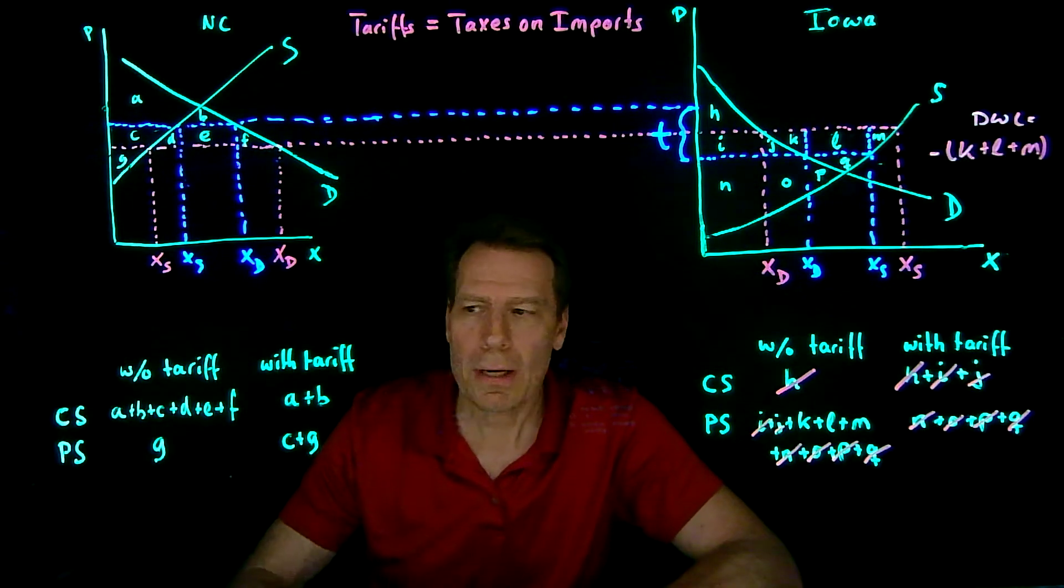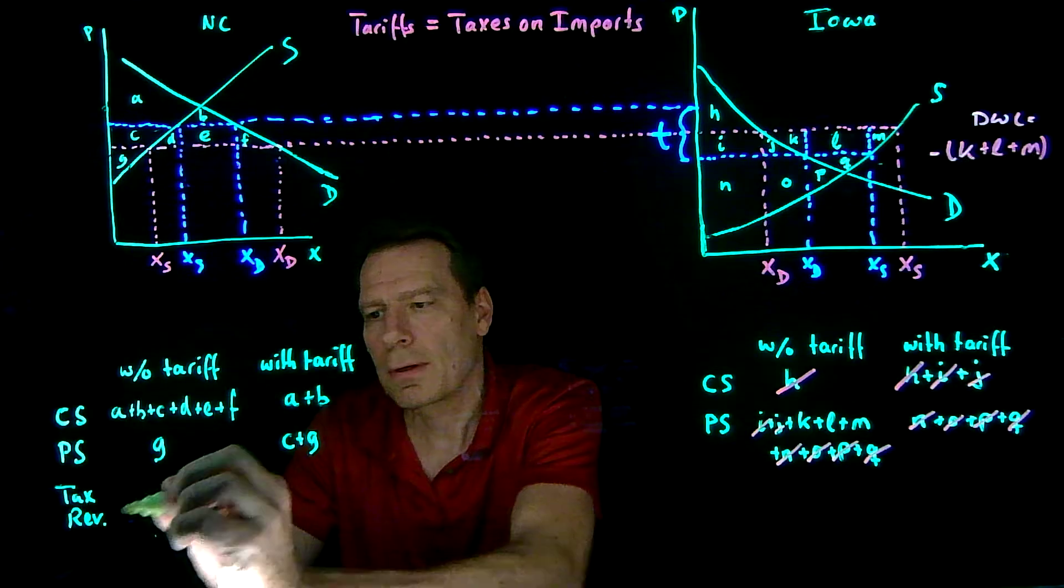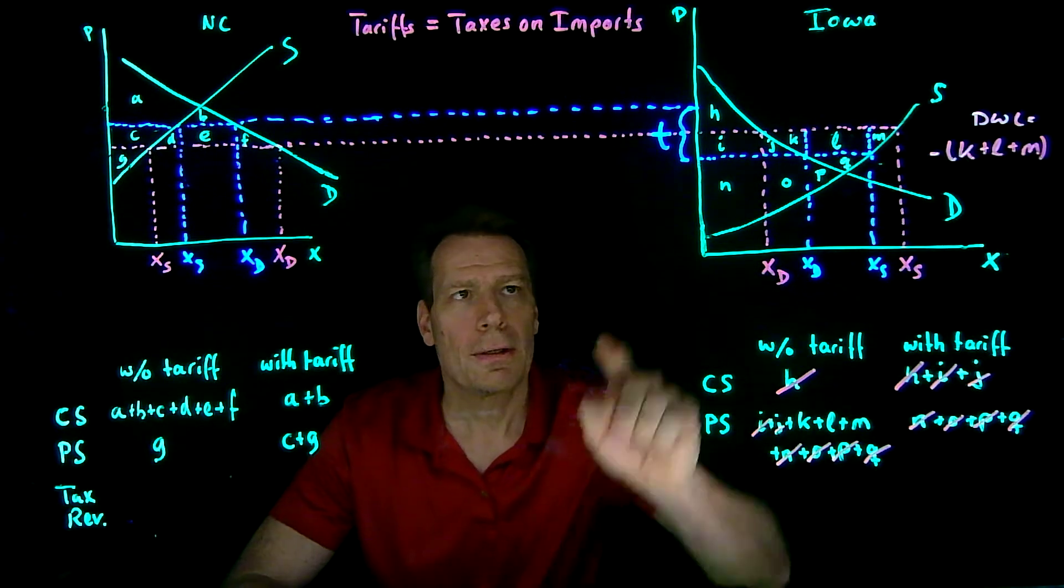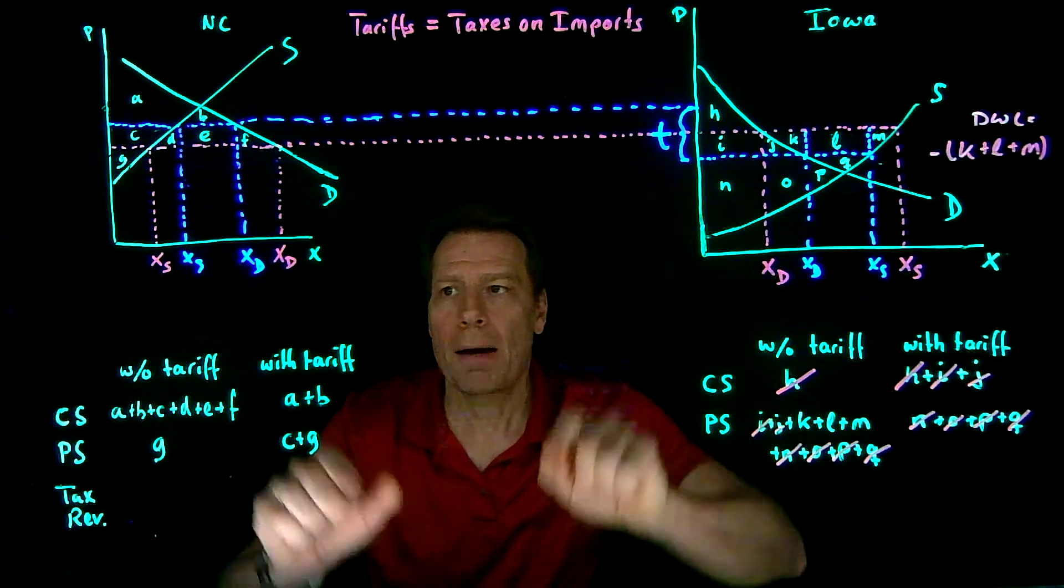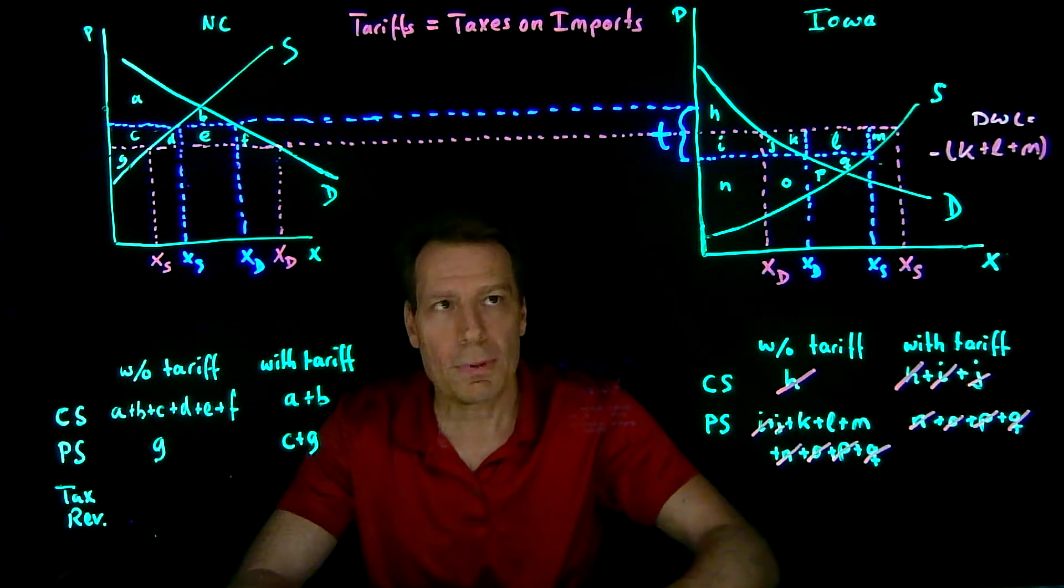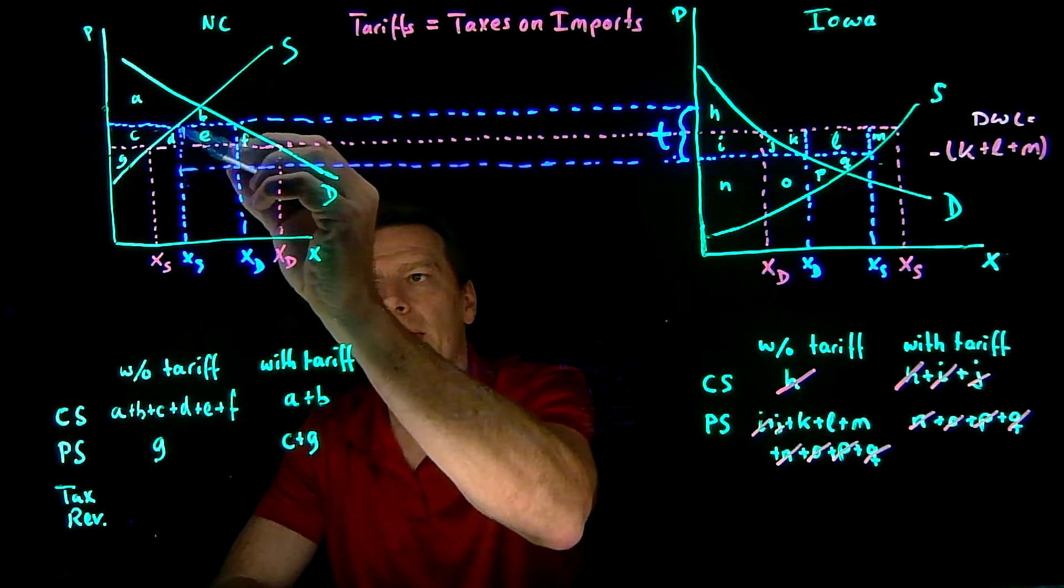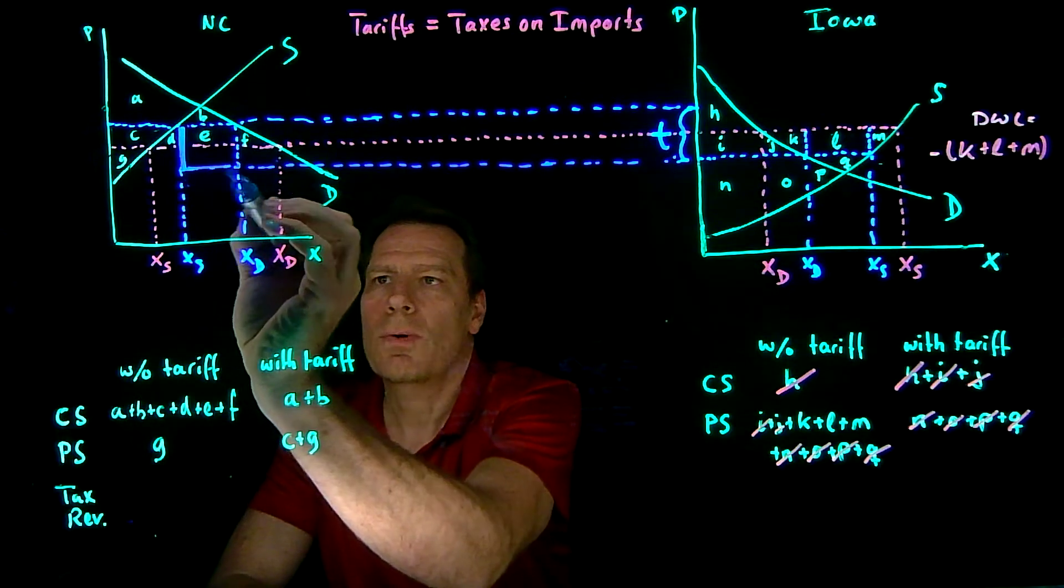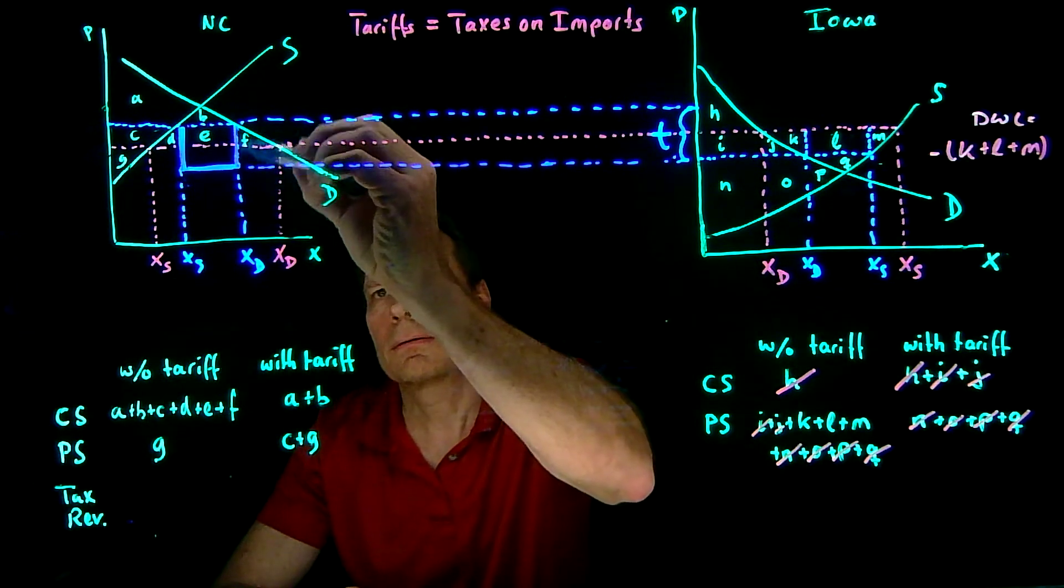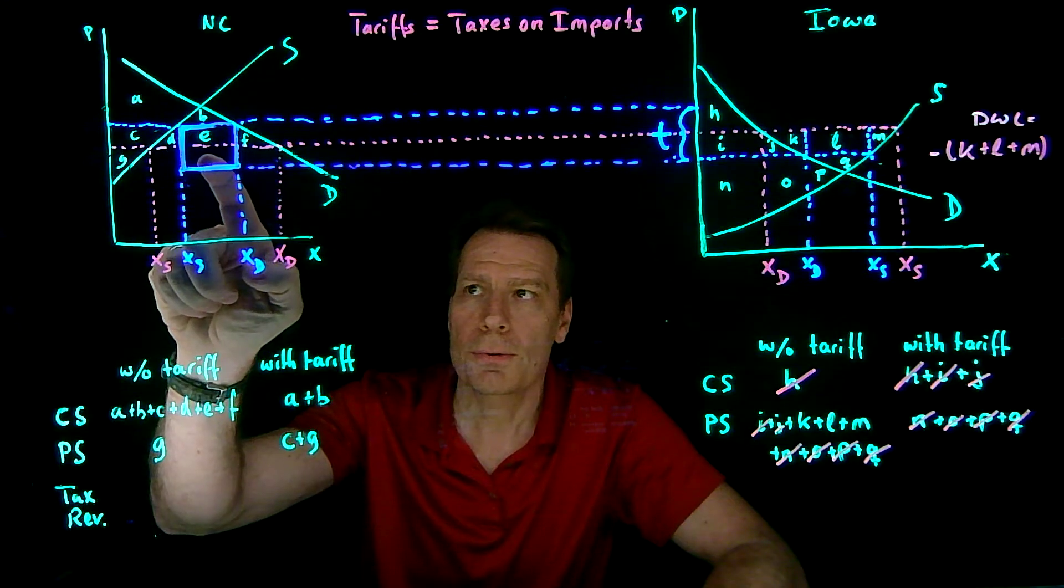What about over here? Well, we are not quite done here because we haven't accounted for the tax revenue yet. In fact, North Carolina collects tax revenue under the tariff. And that goes to somebody, so it should count as part of the surplus. So how much tax revenue is being collected? Well, it's the size of the per unit tax times how much is being imported from Iowa. So it's this distance times this distance. So let's bring that distance over. We now see that's this distance. That's the per unit tax. And this quantity is how much was imported from Iowa. So it's that rectangle in here. It includes the area E and also includes this unlabeled area here.